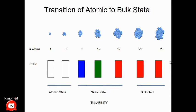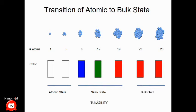Gold nanoparticles in the nano size range actually look red, not yellow. And if gold particles are aggregated — multiple particles assembled together — the color shifts to blue. So the bulk state is yellow, the atomic state is clear, but in the nano range — say six to 19 atoms — the color is directly related to the number of atoms. Six atoms gives blue, 12 gives green, 19 gives red. This is called the nano state, and this is what I mean by tunability: you can tune the properties of a material simply by changing the size.